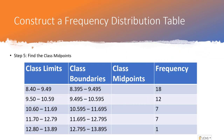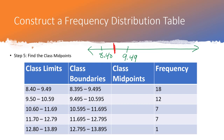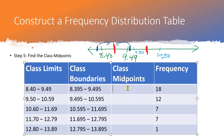Now we're ready to find class midpoints. A class midpoint is exactly halfway through the class. If we draw the number line with class limits, the midpoint is exactly halfway between them — and all midpoints are the same distance apart. It doesn't matter whether you calculate the midpoint from class boundaries or class limits; they should be exactly the same, because the class boundaries just extend the sides of the class limits. It's easier to use class limits.